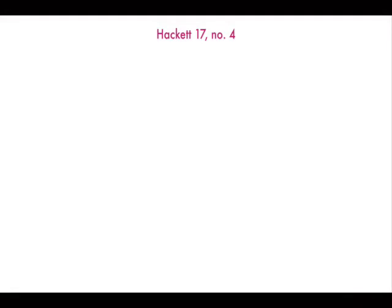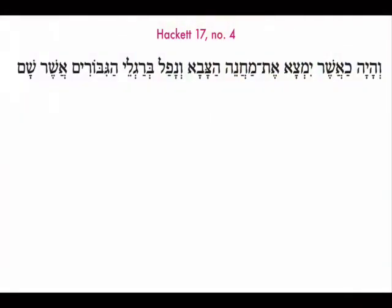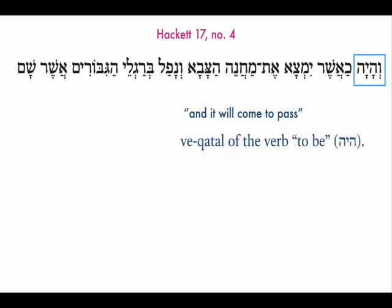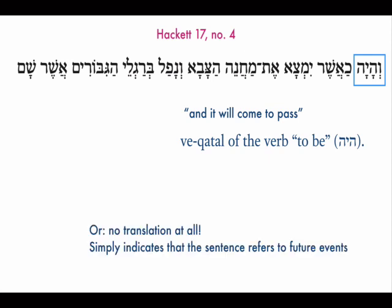Hecate chapter 17, number 4. Here's our sentence, and we start off with v-haya. That is the marker for a future tense sentence. If you want to translate it, you can get every word in there by saying 'and it will come to pass.' So that's a v-katal, sometimes called a converted perfect — the vav plus the perfect or suffix form, haya, to be. Because of the vav, the conversion, it points to some future sentence. You can simply leave this untranslated; it just indicates that the sentence is going to refer to some future event.